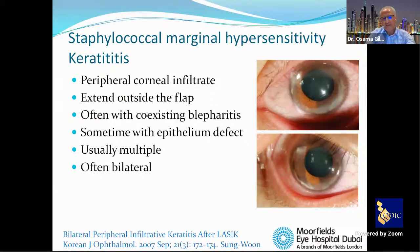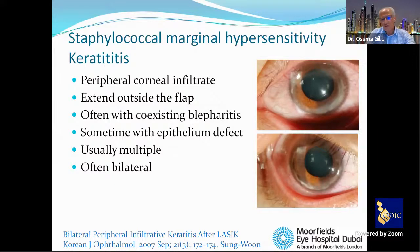Staph marginal hypersensitivity keratitis is actually more common than infective keratitis. Characteristically, infiltrates appear in the periphery — often outside the flap margin — which is more typical of a reactive response, since bacteria cannot move beyond the flap without an epithelial defect. Often associated with blepharitis, there may be an epithelial defect, usually multiple and potentially bilateral.